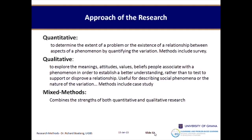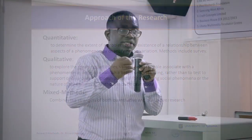Mixed methods combine the strength of both quantitative and qualitative. We can look at the extent of variation here to support the meanings we associate there. Because when you look for meanings, they may only apply in that locality — but you can then check to what extent those meanings you have found are represented in a larger society. Hence you do a quantitative study. Somebody can do a quantitative study after a qualitative, to establish the strength of relationships found in the society or the hypothesis.